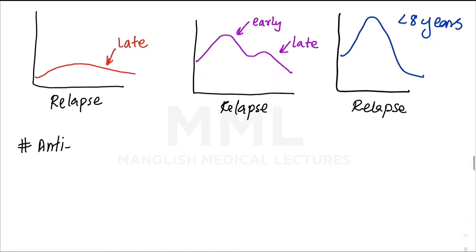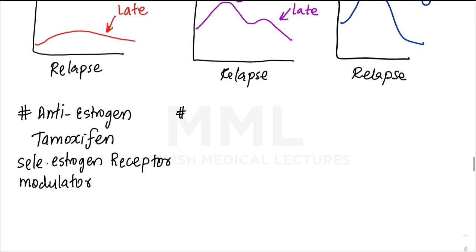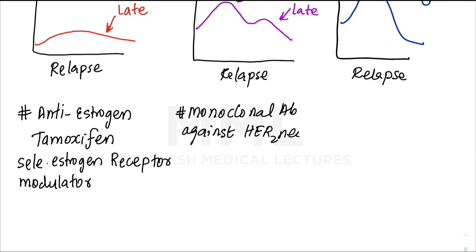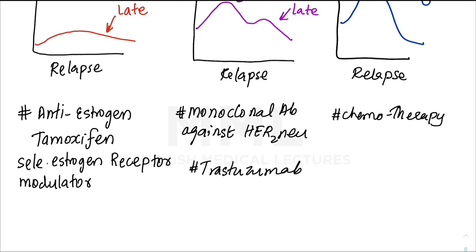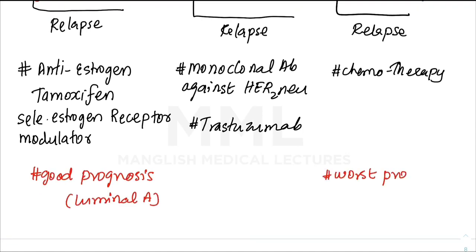Knowing the molecular type allows us to select targeted treatment. For ER-positive cancers, we give anti-estrogen therapy like tamoxifen, a selective estrogen receptor modulator. For HER2-positive cancers, we give trastuzumab (also called Herceptin), a monoclonal antibody against the HER2 receptor. For TNBC, since there is no targetable receptor, we give chemotherapy. ER-positive (Luminal A) has good prognosis; TNBC has the worst prognosis.